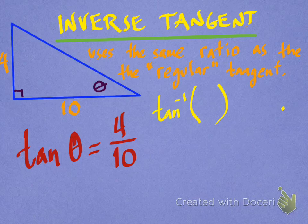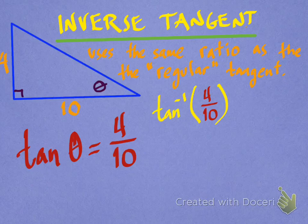The inverse tangent function also uses opposite over adjacent. In that case, this is 4 over 10. So your calculator is going to do all of this work here. You need to find the inverse tangent function on your calculator and let it figure out what the inverse tangent of 4 over 10 is.